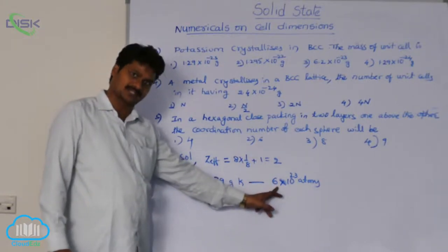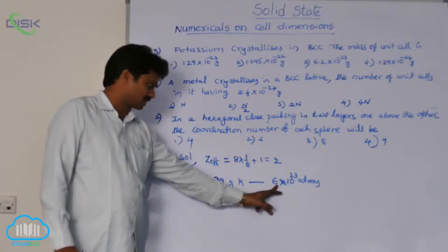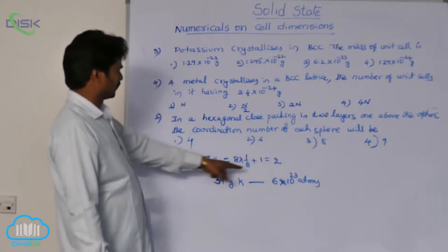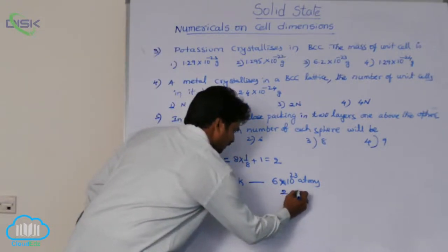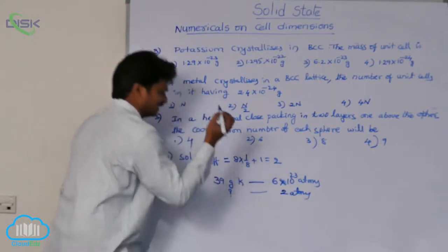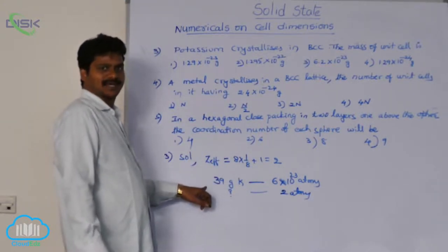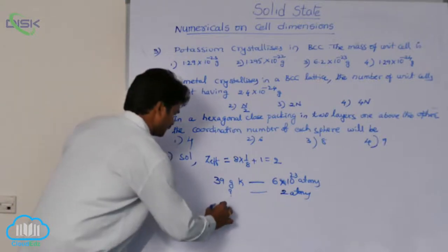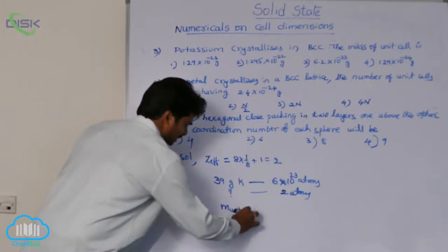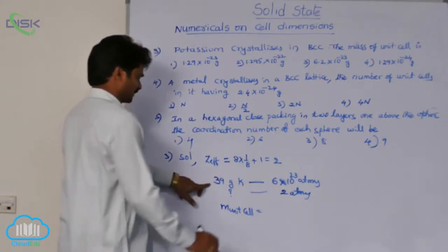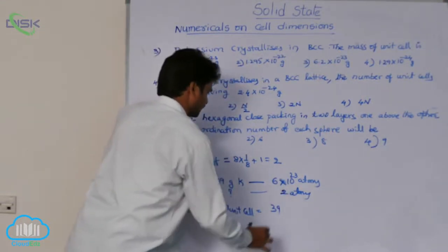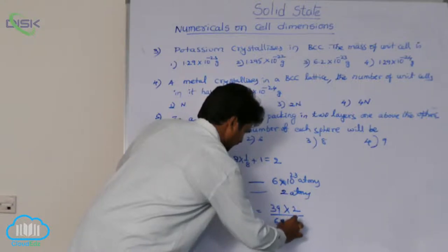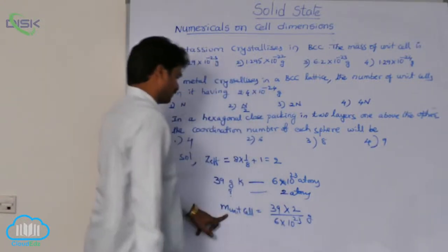Avogadro's number of potassium atoms has a mass of 39 grams, but per unit cell we have only 2 atoms. So for 2 atoms, we calculate the mass by cross-multiplication: mass of the potassium unit cell equals 39 × 2 divided by 6×10²³ grams. This gives the mass of 1 unit cell.